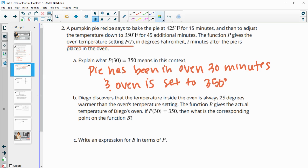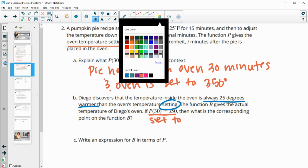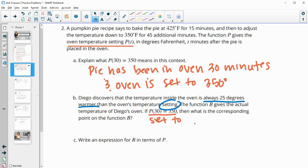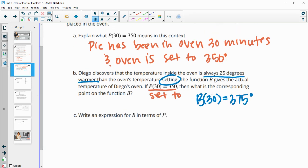So Diego then discovers that the temperature inside the oven is actually always 25 degrees warmer than the setting. So the function B gives the actual temperature of Diego's oven. So if P of 30 equals 350, so remember this is the setting, so this is what the oven is set to, what would the actual temperature be? So remember the actual temperature is 25 degrees warmer. So B of 30 would actually be 25 degrees warmer or 375 degrees. So after 30 minutes, if the oven is set to 350, the actual temperature is 375.